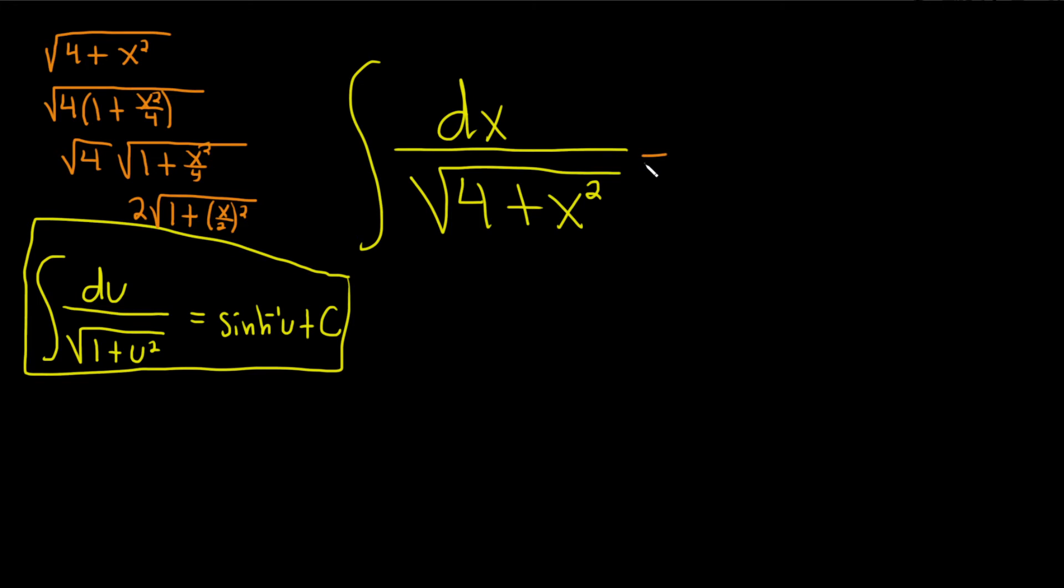So let me write it a little bit bigger so you see what I've written in case you can't see it. So this is dx over 2 square root 1 plus parentheses x over 2 squared. Really, really beautiful problem. And now we can make our u substitution.